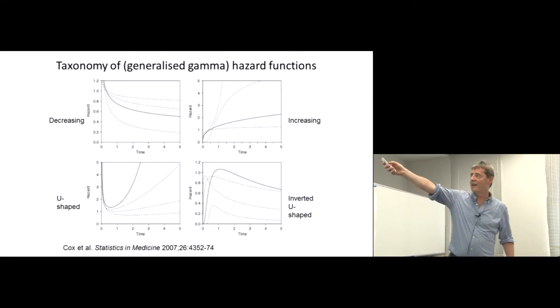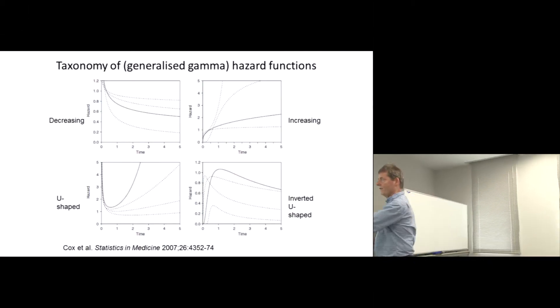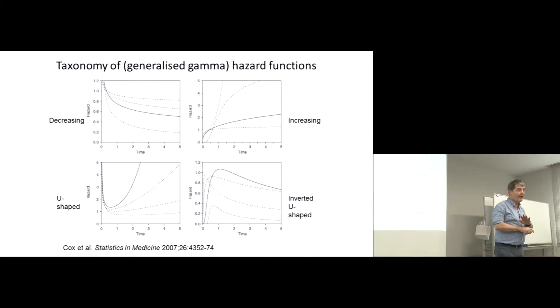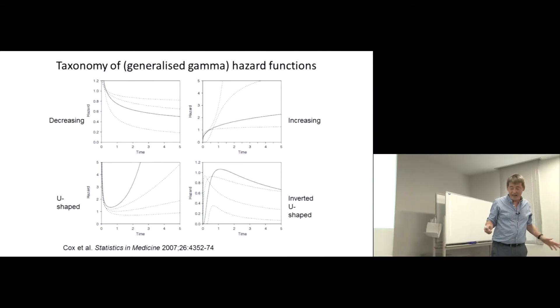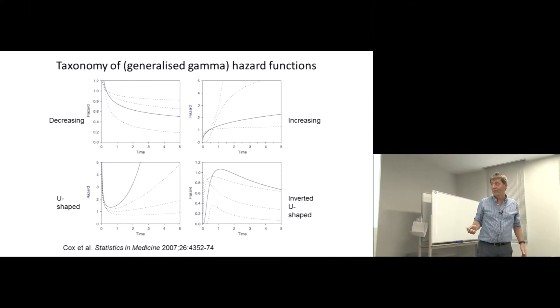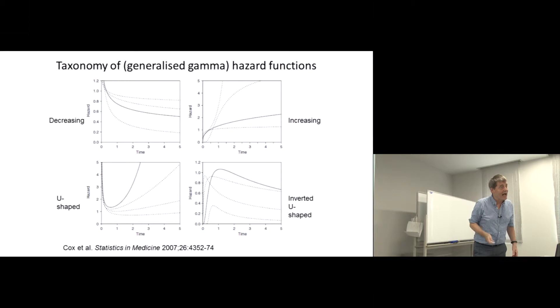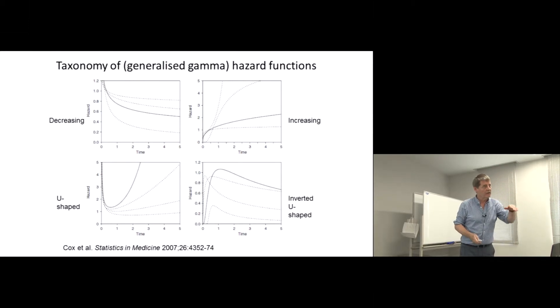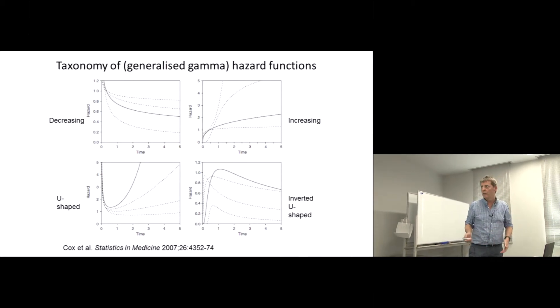This is hazards changing over time. We've got a wide range of different possibilities. The Cox proportional hazards model doesn't make any assumption about that. All it assumes is whatever shape it has, it's the same shape for everybody. It's the same shape for the under 60s as the over 60s. It's the same shape for men as for women.